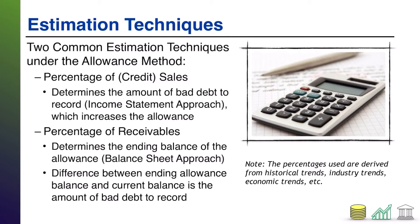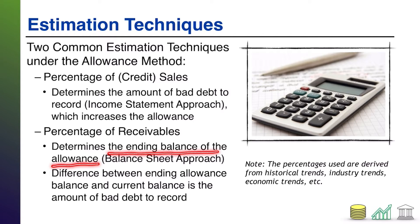The other technique, and the one I'm going to spend time on in this video, is percent of receivables. In this situation, instead of assuming that a certain percentage of your credit sales will be uncollectable, you instead assume that a certain percentage of your receivables will be uncollectable. You take a percent of your receivables, and that percent tells you the ending balance you need in your allowance for doubtful accounts. The difference between that ending balance and whatever balance is currently in the allowance account is what you record — debit bad debt expense, credit allowance for doubtful accounts.